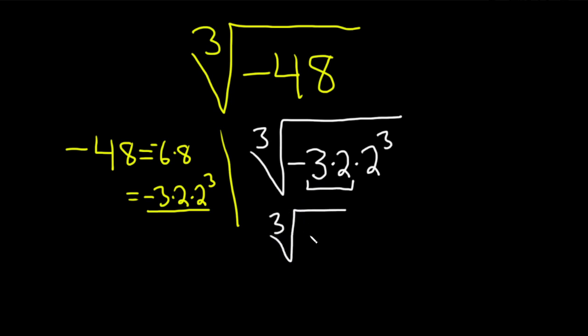So cube root negative 6 and then cube root 2 cubed. And the reason we wanted to do that is because whenever the index matches the exponent that you see inside this piece here, this is called the radicand, it cancels.